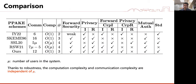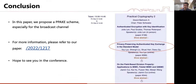At last, we compare our work with other related works. As shown in the table, the communication and computation complexity are independent of the number of users due to robustness. To conclude, we propose a PPAKE scheme especially for the broadcast channel. For more details on our work, please come and watch our presentation at the conference. Thank you.